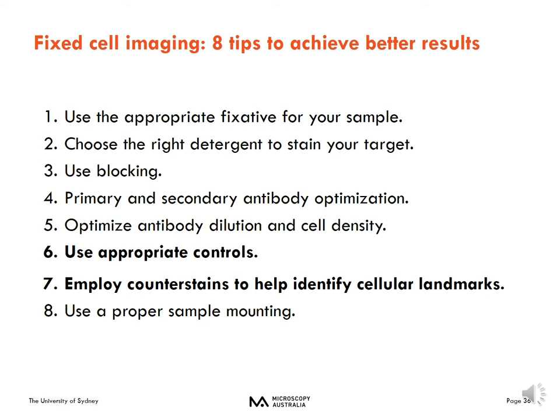Number seven: it's also important to use counter stains, as they may help you identify cellular landmarks. For example, if you are interested in structures in the perinuclear area of the cell, you may need to use a good marker for the nucleus. Or if the target of interest is near the plasma membrane, you might need to use a cell mask. It's important when designing your experiment that these counter stains don't interfere with the staining of your other markers.